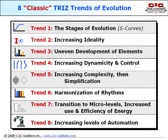There are eight classic and dozens of modern trends of evolution which can help predict future generations and create roadmaps for your products. These eight trends, as well as many of their modern subsets, will be explained in the workshop.